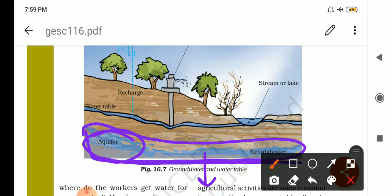The area where water fills the aquifer is called the saturated area or the zone of saturation. The upper layer of this zone forms the water table. As you can see here, this is the water table.